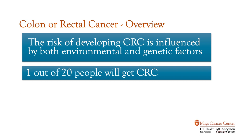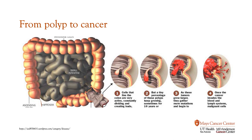If we look at where the colon and rectum is, you can see that it's an upside-U shape. The left side of the colon is more referred to as the rectum, and the right side is more referred to as the colon. In this organ, you can have polyps form at any part of the colon or the large intestine.